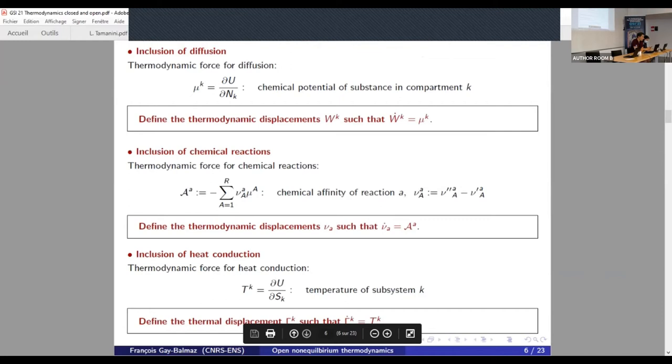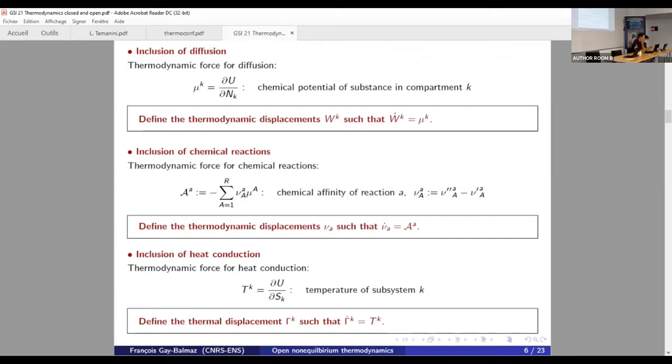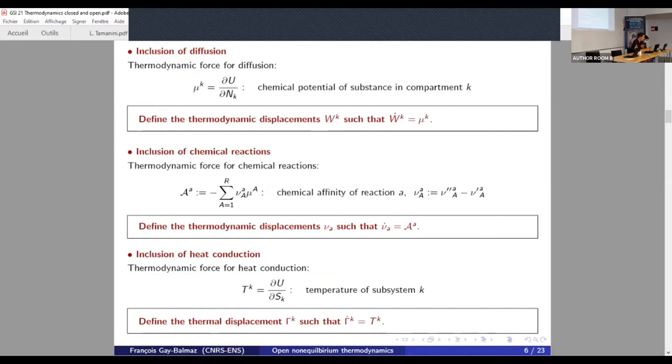So now I can review the preceding examples by simply observing that for each process, diffusion, chemical reactions, heat conduction, to apply our theories enough to identify what's the thermodynamic force of the process. Here, for instance, for diffusion is the chemical potential. For chemical reaction, it's the chemical affinity. For heat conduction, of course, it's the temperature. Each time we define a new variable, a kind of Q, like in mechanics, such that its time rate is the thermodynamic force of the process. So we name it W, here W dot is mu, mu dot is A, gamma dot is T. So these are just instances of the same theory, the same approach. So we name this thermodynamic displacement.